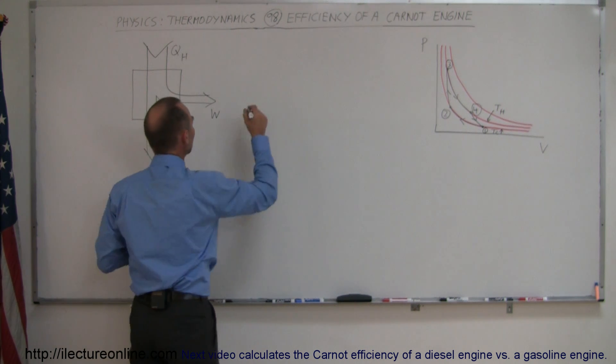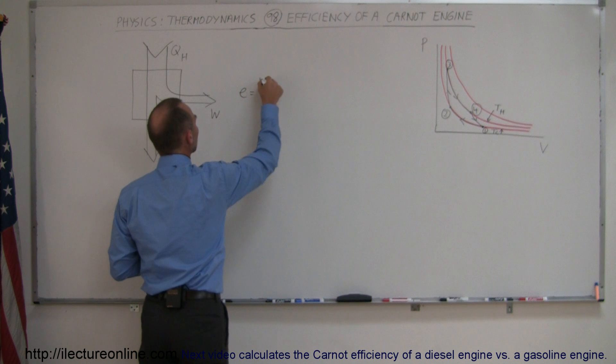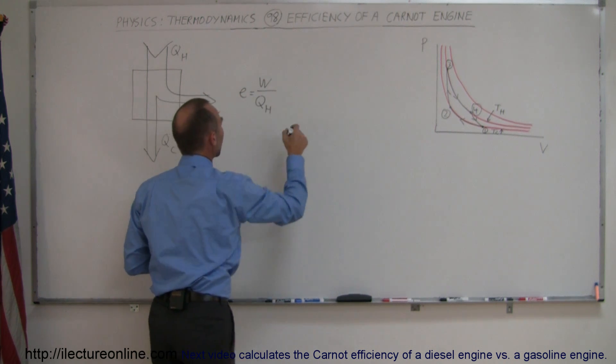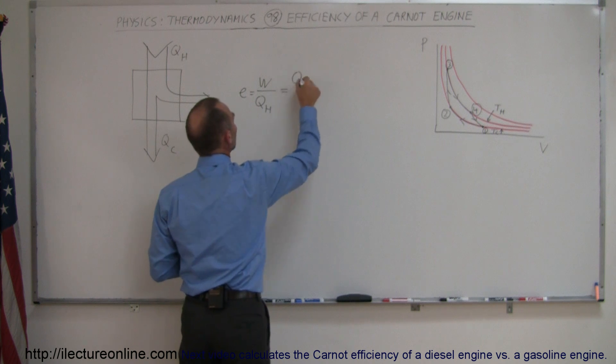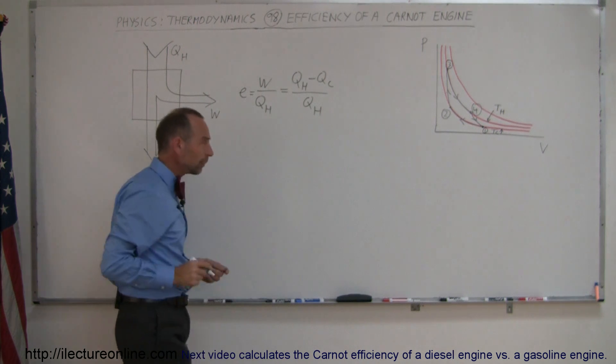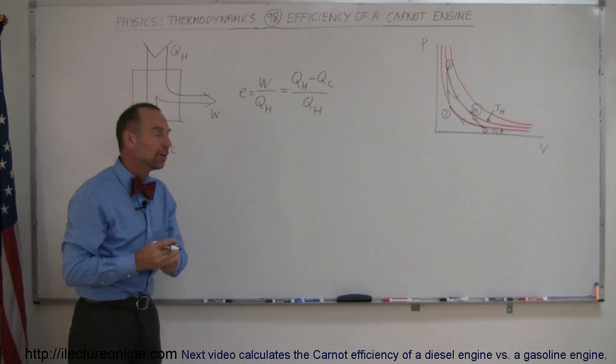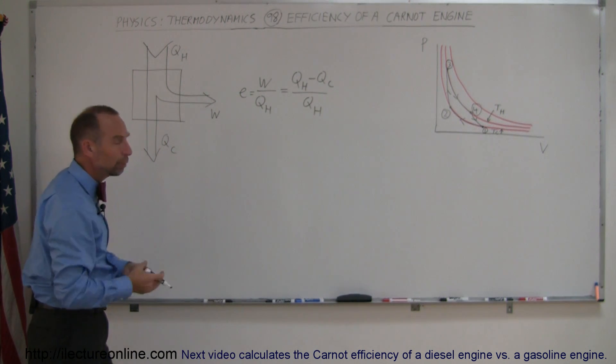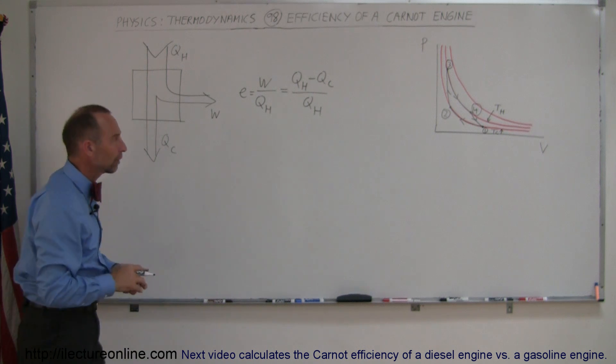Normally an efficiency of an engine can be defined as the work done divided by the heat received from the hot reservoir. This can also be written as Q_H minus Q_cold divided by Q_H. Q_H being the heat received from the hot reservoir and Q_cold being the heat expelled to the cold reservoir.